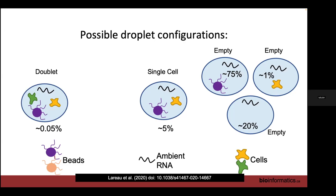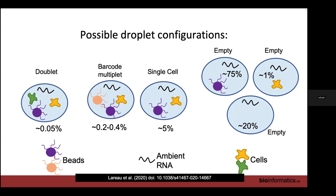About 20% of droplets have only ambient RNA and nothing else, and 75% of the time we have a barcoded bead with ambient RNA, meaning that bead can capture ambient RNA and generate cDNAs that end up in our sequencing data. We can also get doublets — one droplet with two cells and one barcoded bead. Less common is a barcode multiplet, where one droplet has two barcoded beads and one cell, which is actually more common than doublets. In the sequencing data you can't tell a barcode multiplet apart from having two cells.